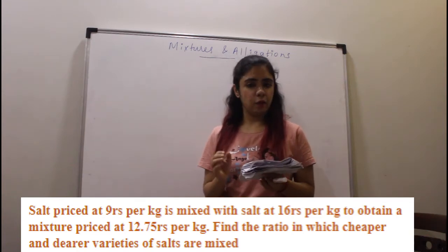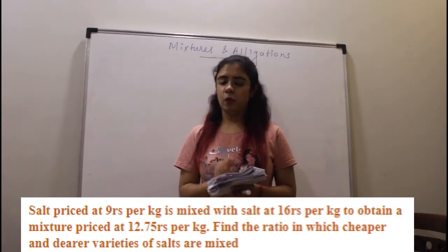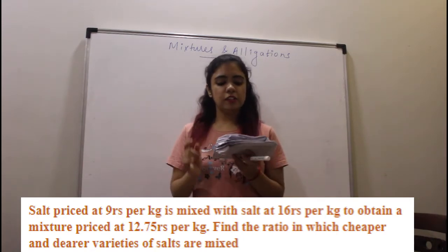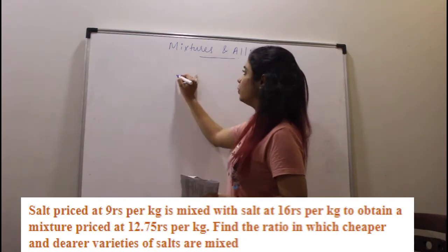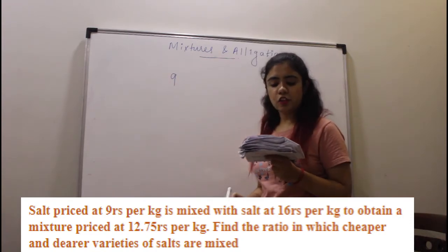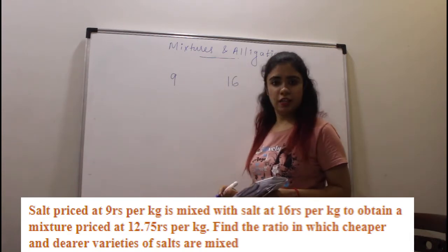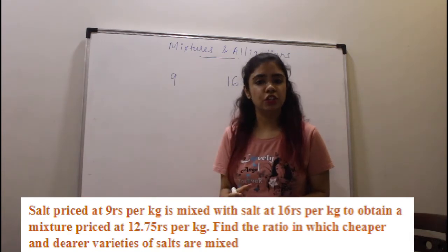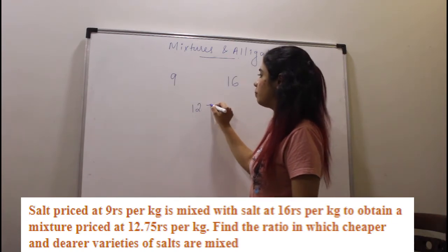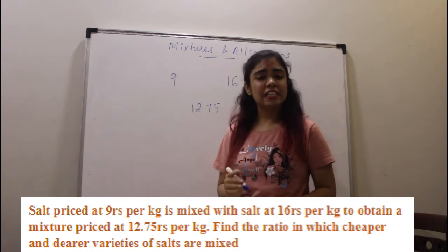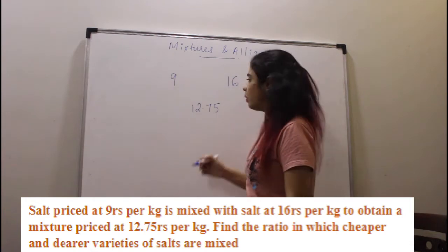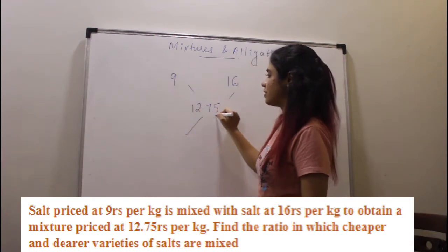So you have three types of salt: one is the cheaper salt, one is the dearer salt, and one is the mixture salt. The cheaper salt costs 9 rupees per kg, the dearer salt costs 16 rupees per kg, and the price of the mixture is 12.75. They are asking you in what ratio are they mixing the cheaper and dearer. So what I'll do is take a cross.